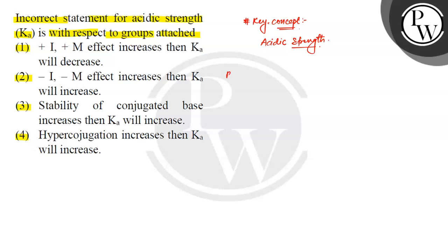First, we take an acid — let's say we have RCOOH. When we dissociate it, it gives RCOO⁻ and H⁺. Now, RCOO⁻ is your conjugate base. The Ka value can be written accordingly.